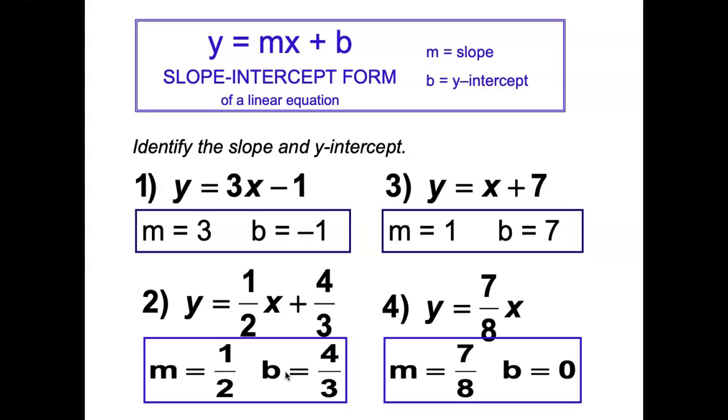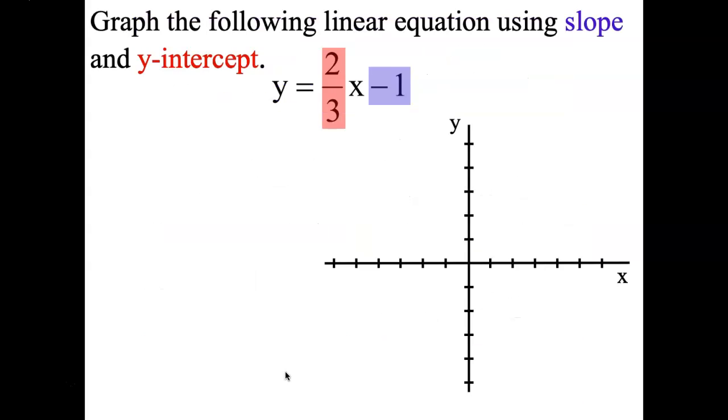Now for our lesson today, we're going to learn how to graph. Given an equation, you need to identify both the slope and y-intercept. So I colored them for you. Here is your slope, 2 out of 3, and minus 1 is the y-intercept.